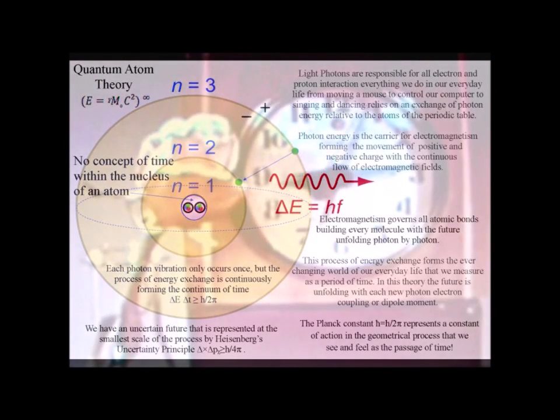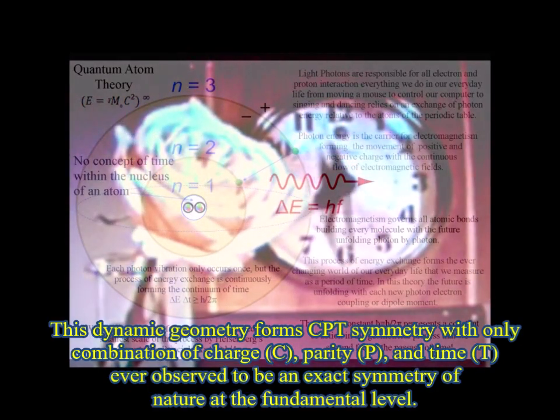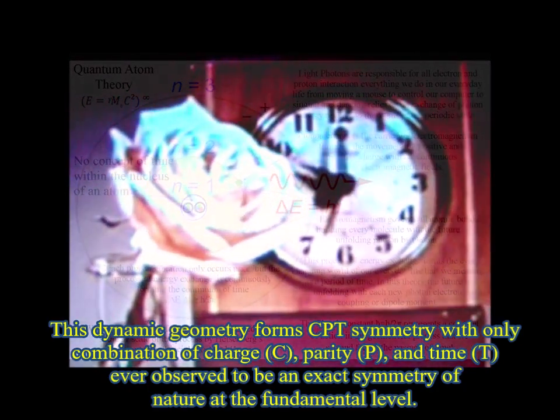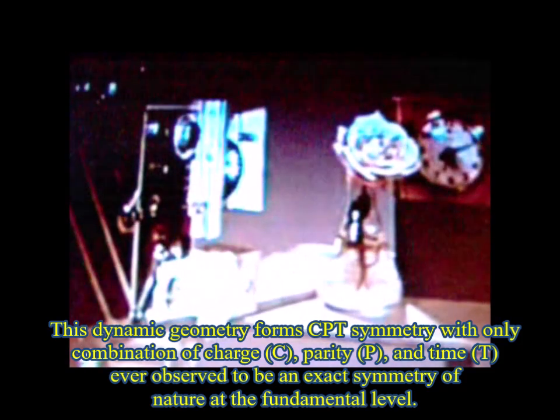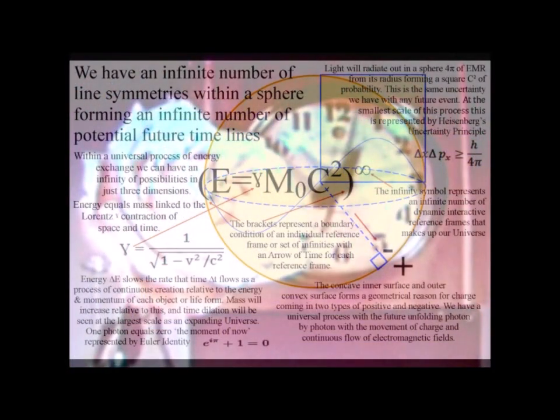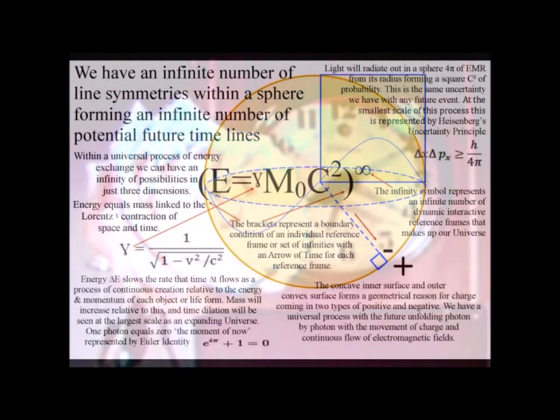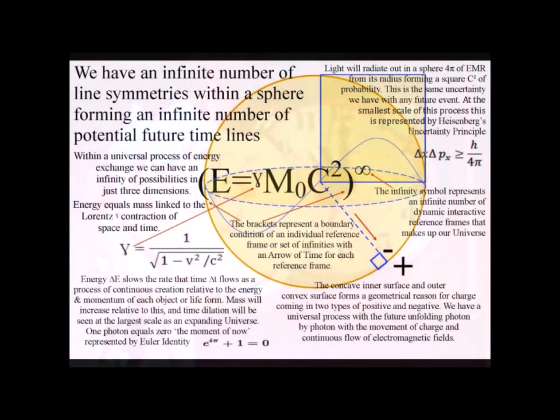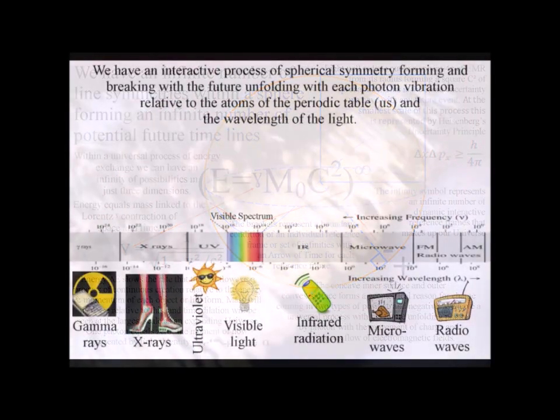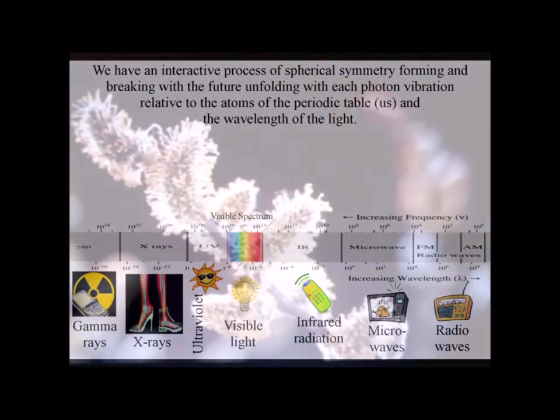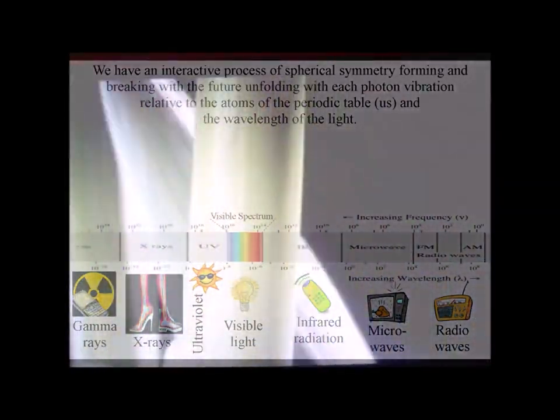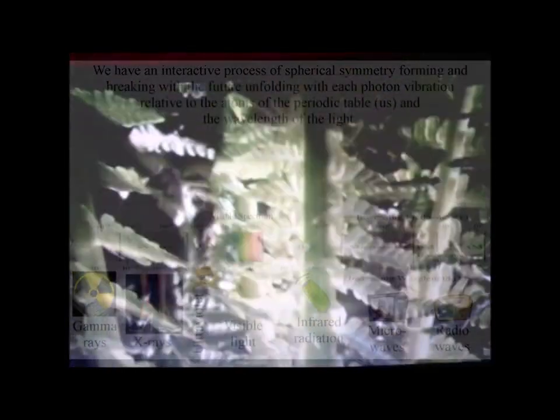The wavefront can only spread out in the forward direction because it is part of an emergent process that forms the forward passage of time. Relative to each object or life-form, the forward momentum of light and the forward passage of time are part of the same process, formed by the spontaneous absorption and emission of light.